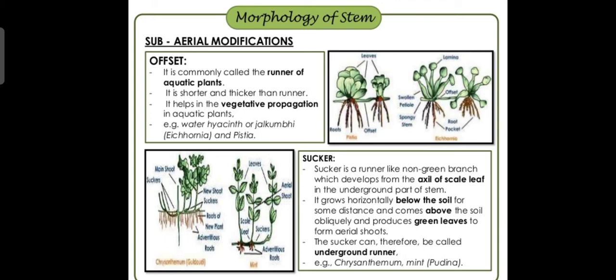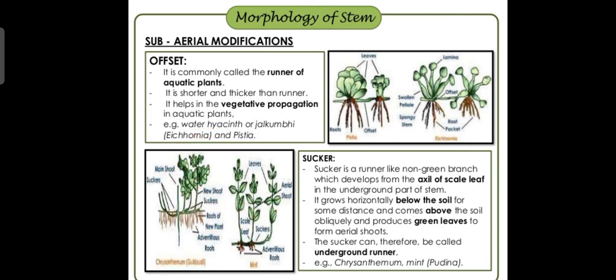Suckers grow horizontally below the soil for some distance and then come above the soil. Once sowed in the soil, the sucker forms adventitious roots, moves forward a short distance, forms more adventitious roots, and a shoot system develops. Then it moves again and forms another shoot system. They then produce green leaves to form aerial shoots. Suckers can therefore also be called underground runners. An example is mint (pudina).